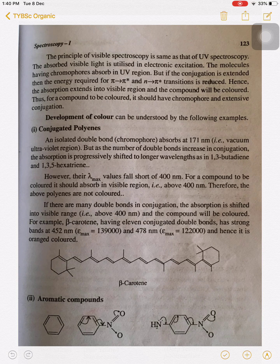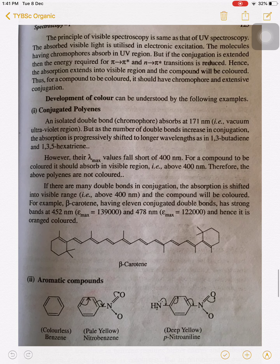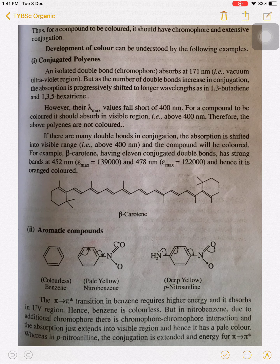The development of color is understood by the following examples. Consider this conjugated polyene — beta carotene. In beta carotene there are more than 10 double bonds conjugated with each other. Due to the increase in conjugation, the energy required for the pi to pi star transition decreases and the wavelength shifts to longer wavelength — that is where the chromophore and auxochromic effect takes place.